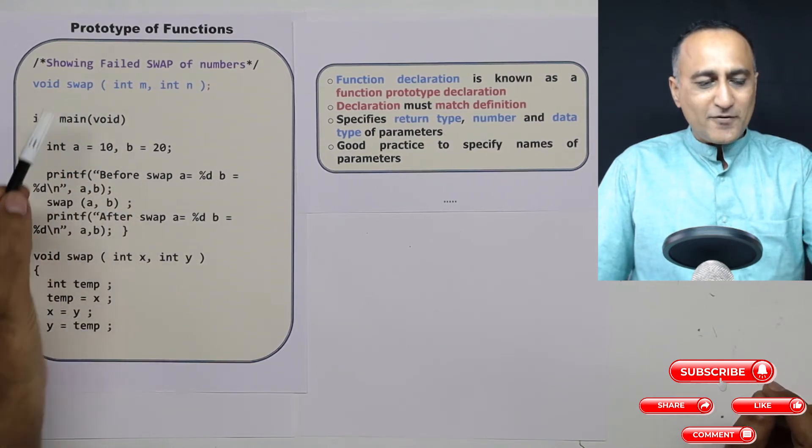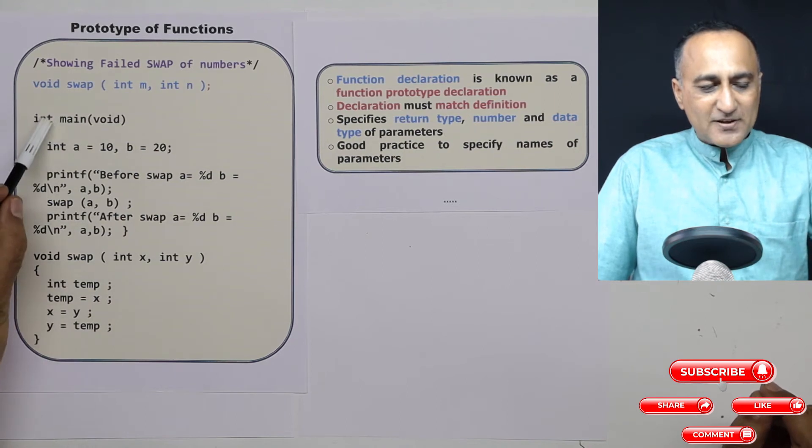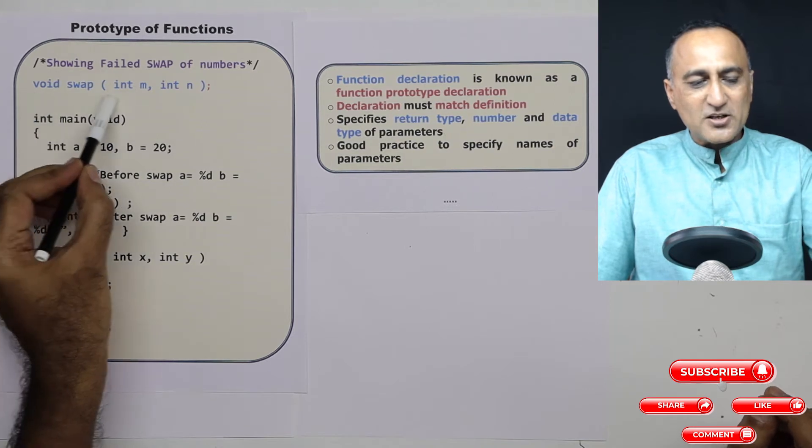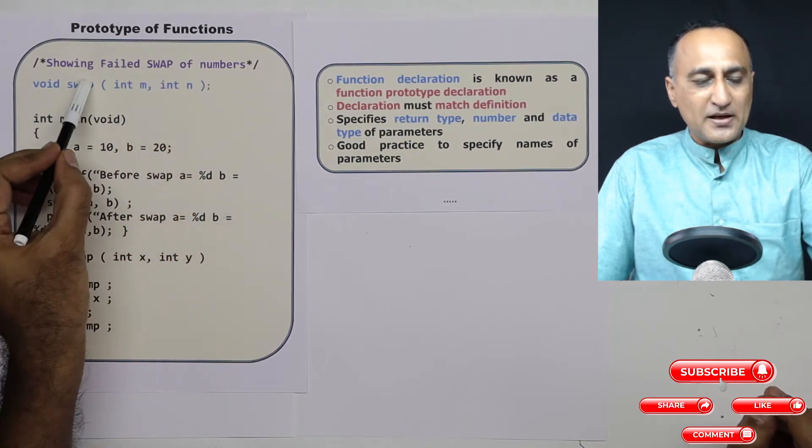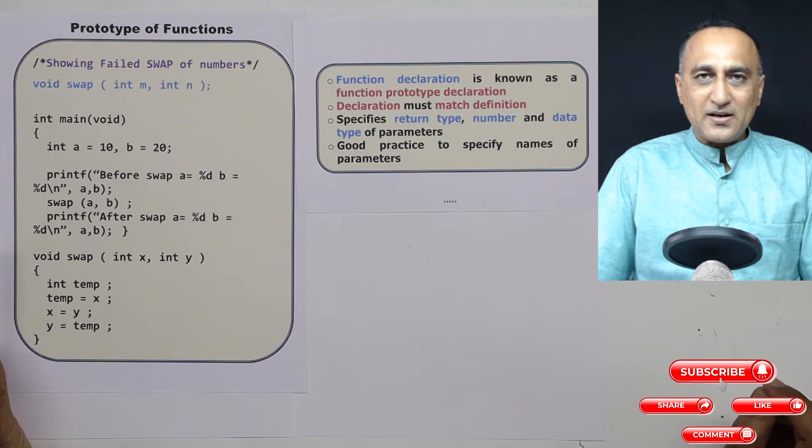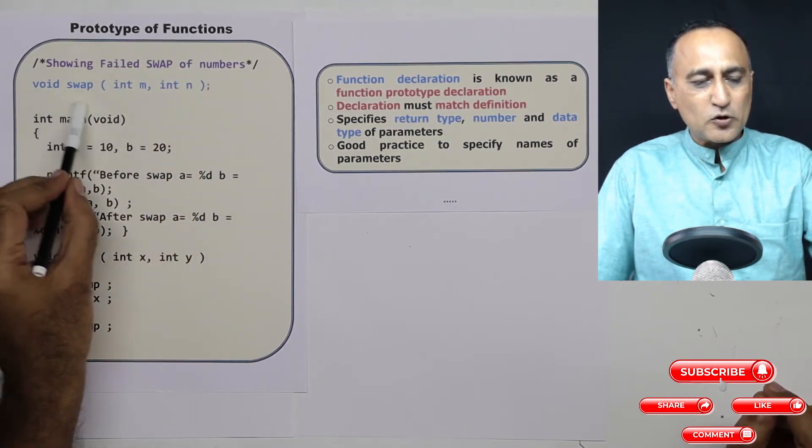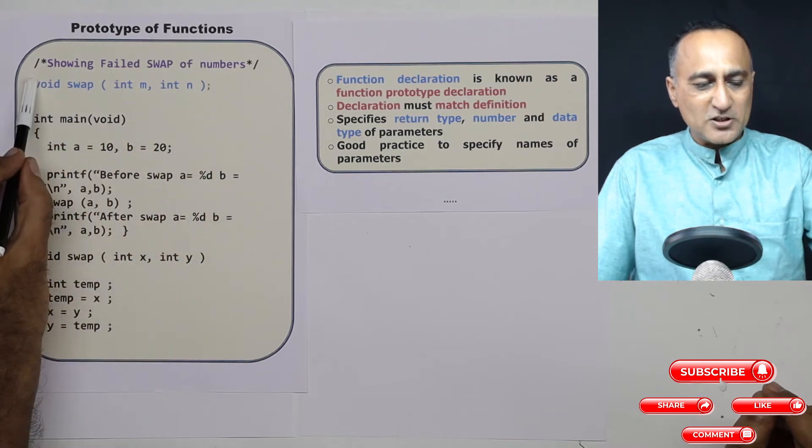So if you have written main first and then the functions which follow, it is compulsory to declare the function prototype at the beginning. Because what the compiler does is it will note down this particular function prototype or the signature of the function.